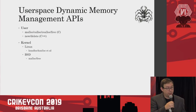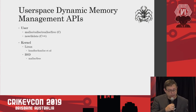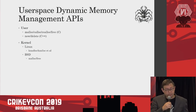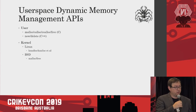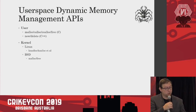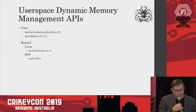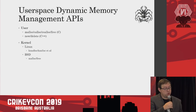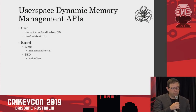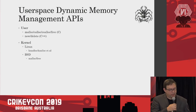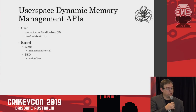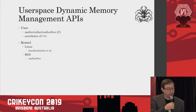There's a user space API to handle dynamic memory management. Many of you are probably familiar with the C API such as malloc and free. There are also variations: calloc, which zeroes out memory, and realloc, which reallocates memory. In C++, you have new and delete, very similar to malloc and free. In kernel space you have a different set of APIs — in Linux, things like kmalloc and kzalloc, somewhat similar to the user space API but operating in the kernel.